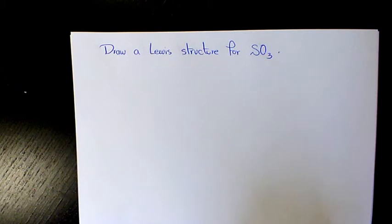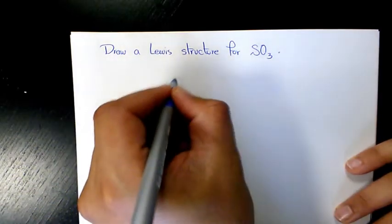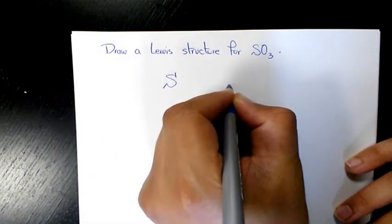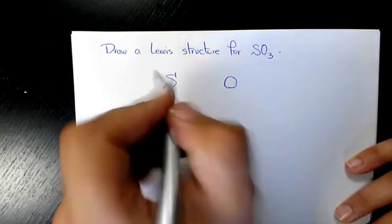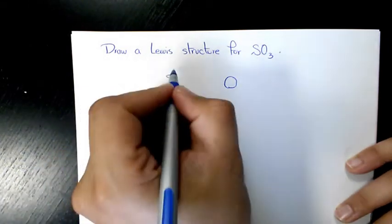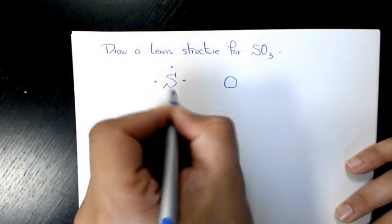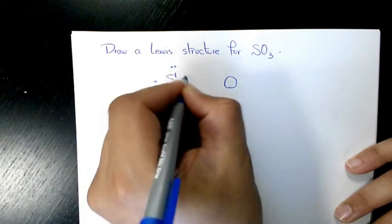So what we need to do first of all is identify the central atom, which is usually the element with the highest bonding capacity. So we have sulfur on one hand and on the other hand we have oxygen. So sulfur is six, one two three four five six, and